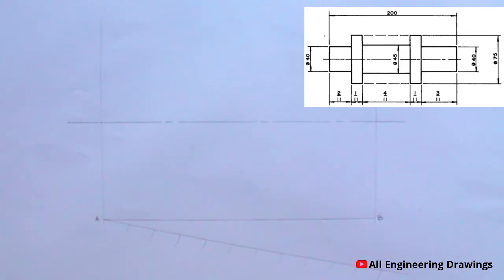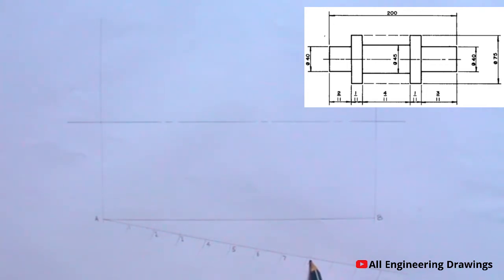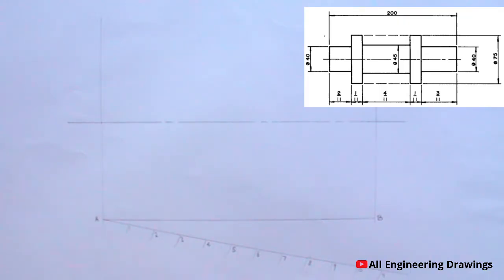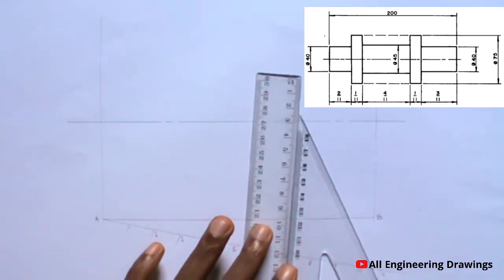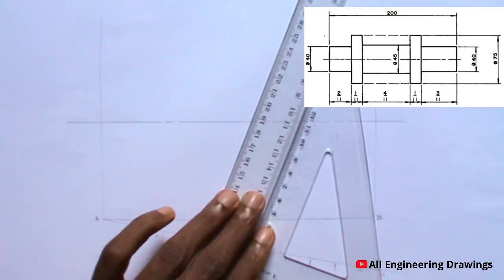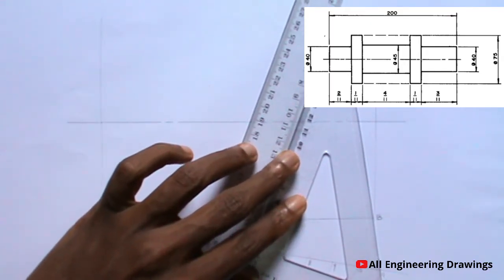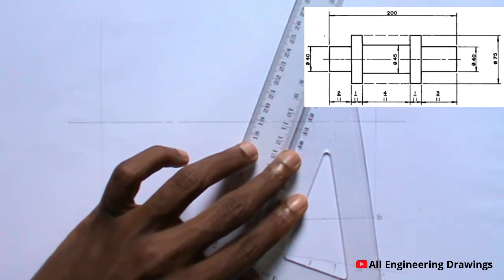After marking the points, you have to number them. After numbering the points, you have to set your ruler and your set square in such a way that your set square passes through points B and point 11.